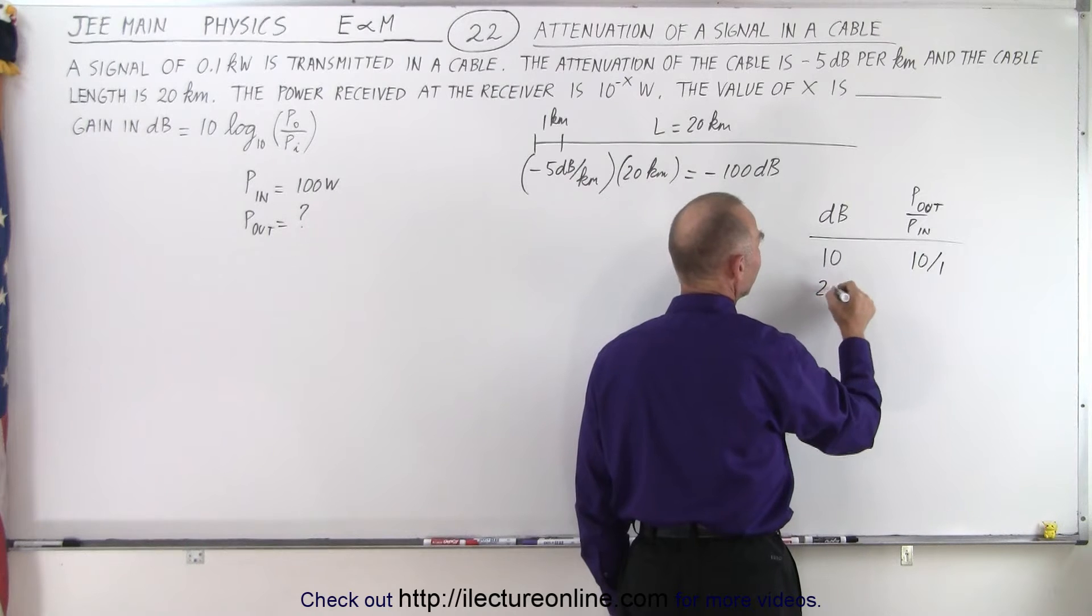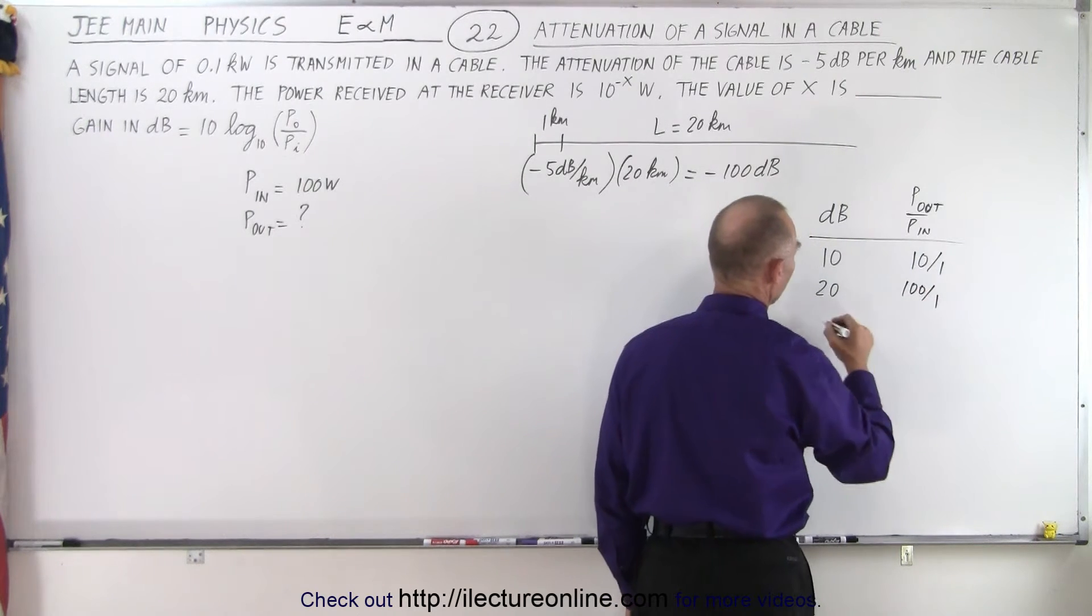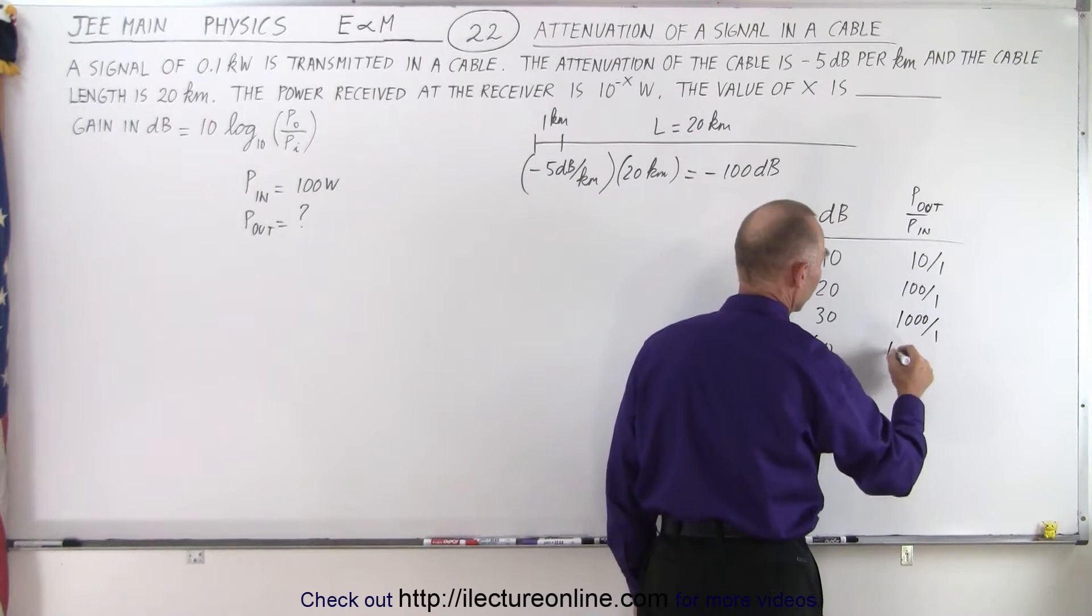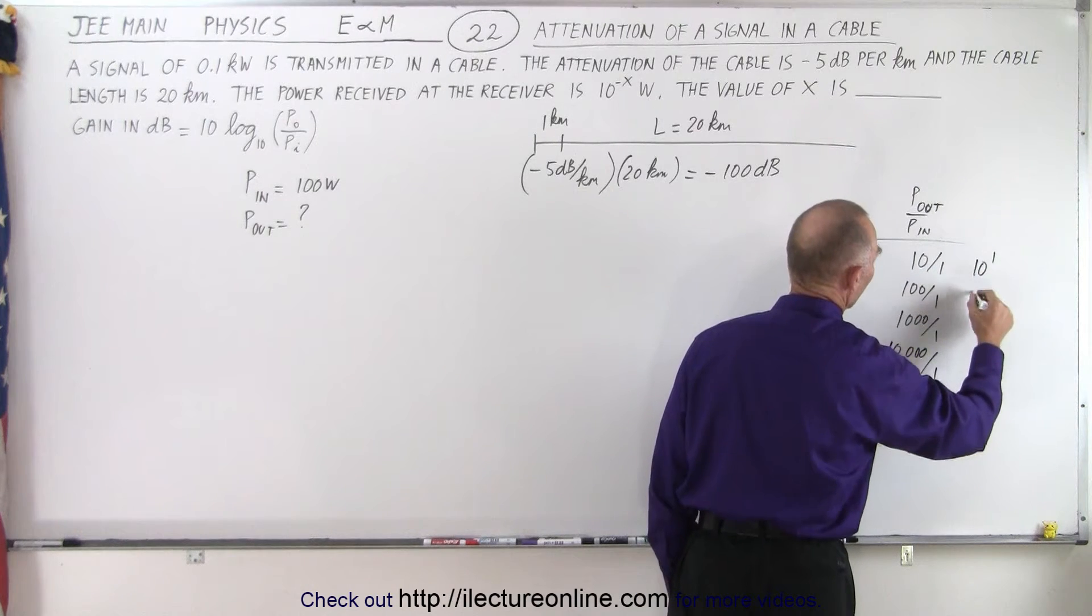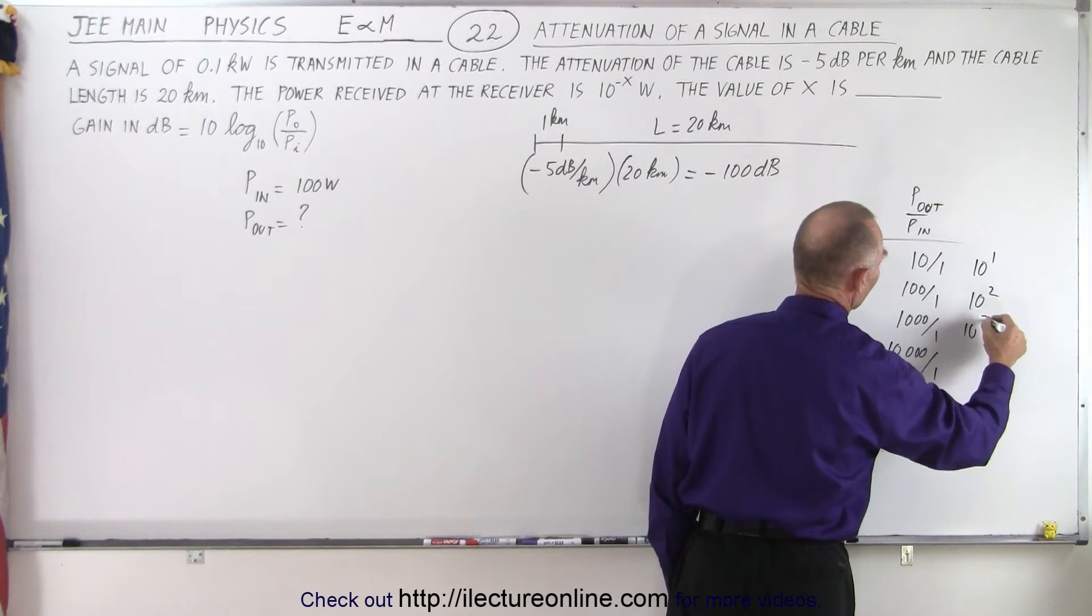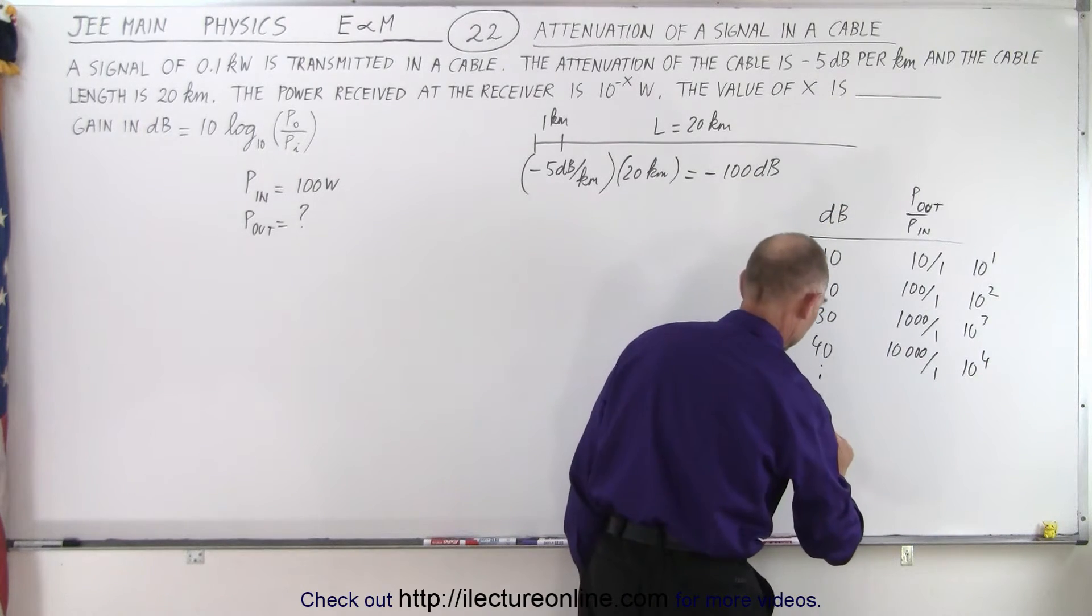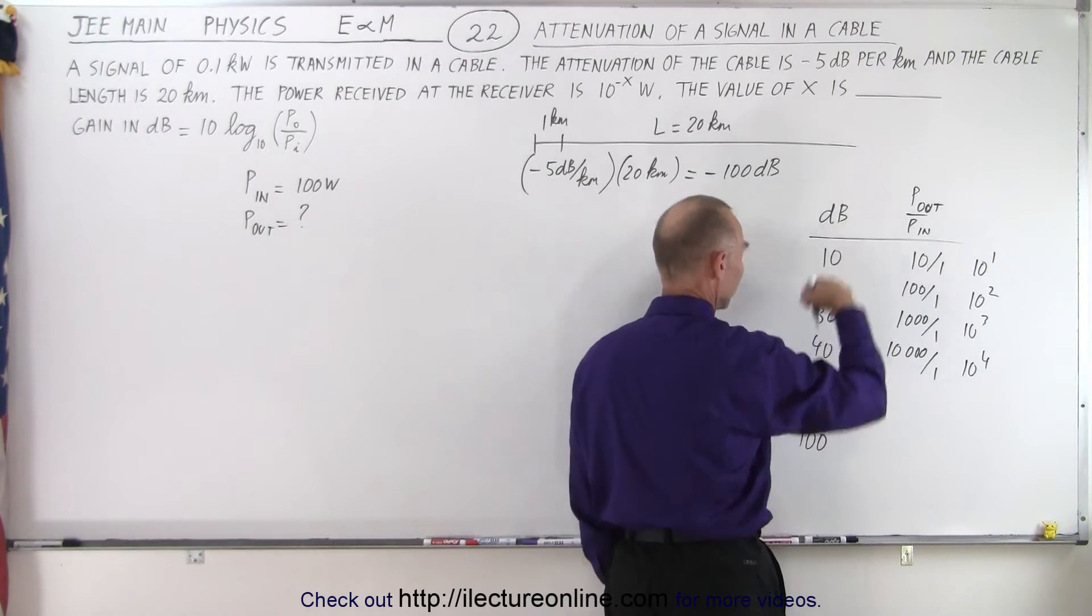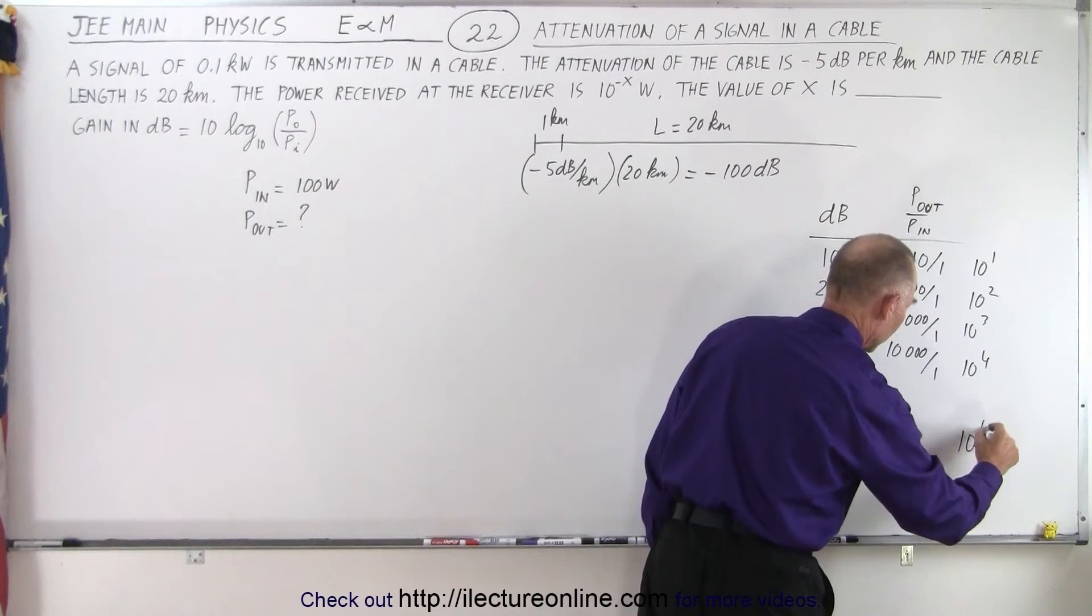If you have 20 decibels then the power ratio is 100 to 1. If we have 30 decibels it's a thousand to 1 and 40 decibels is 10,000 to 1. That would be 10^1, 10^2, 10^3, 10^4, and so if we go all the way out to 100 decibels of gain that means this is 10^10.